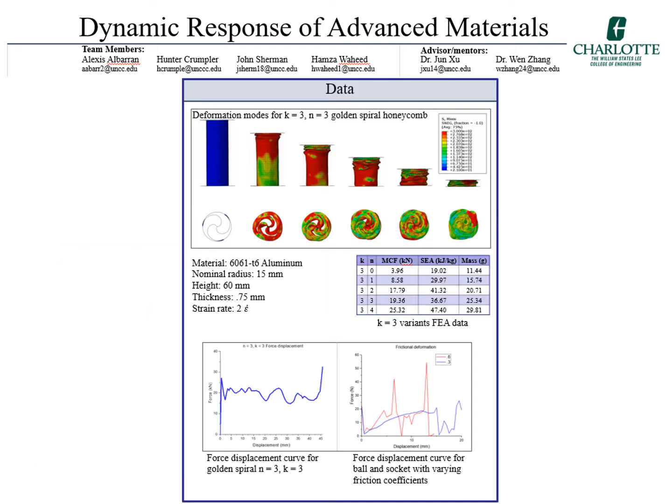The top image describes the deformation of an N equals 3, K equals 3 honeycomb. It shows progressive local buckling, which is commonly seen in literature. As it is a common material in research, 6061 T6 aluminum was used for both models.